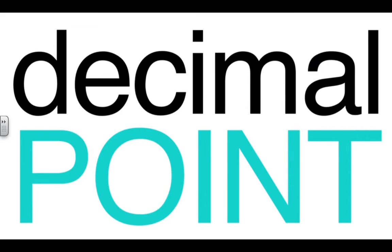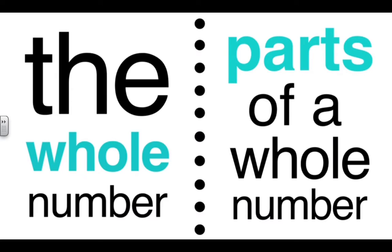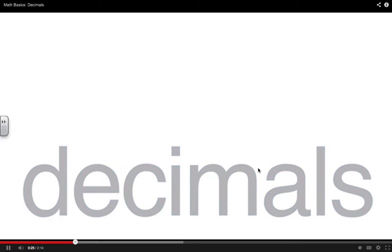When you think about the word decimal, you might think about a dot. This dot is called a decimal point, and it separates parts of a whole number from the whole number. These parts are called decimals. A decimal is a number less than one.